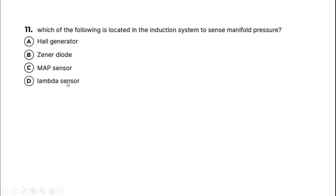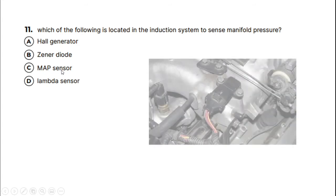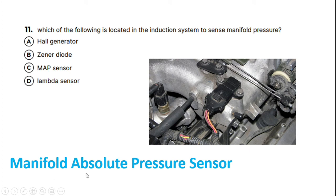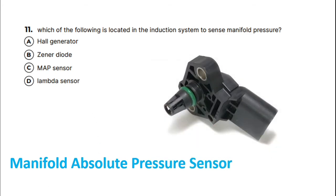Hopefully you are now aware of what a lambda sensor is - that's in the exhaust for measuring oxygen. The hall generator is a sensor that generates signals for wheel speeds or engine speeds. A zener diode, where a diode is a one-way valve or only allows electricity to flow one way. So a MAP sensor is the correct answer. I'll just show you what they look like. They are in the induction manifold, so this is the sensor here fitted to the manifold to sense the pressure. What MAP stands for is Manifold Absolute Pressure sensor. I'm just going to bring in another image to show you what they look like when they're removed. They come in different shapes and sizes, but they are fitted to the induction manifold, the inlet manifold.